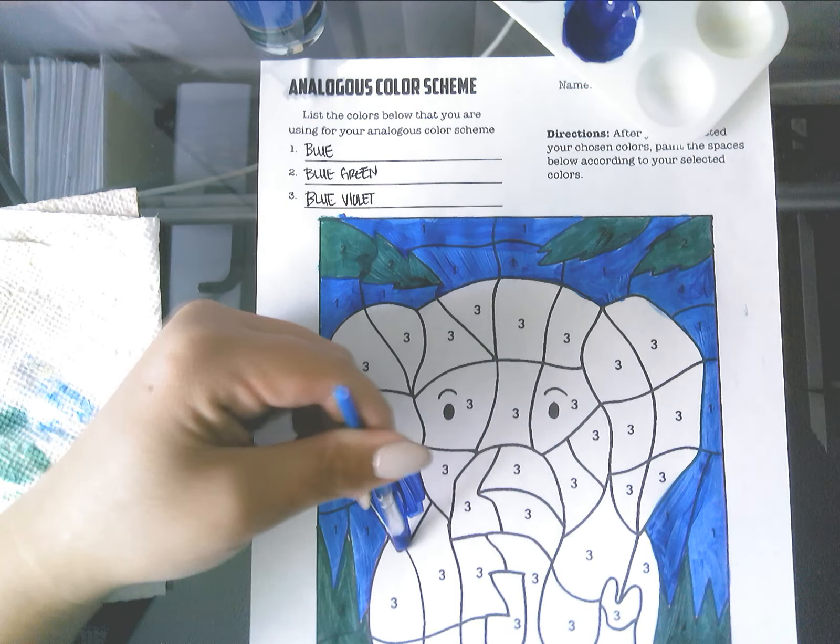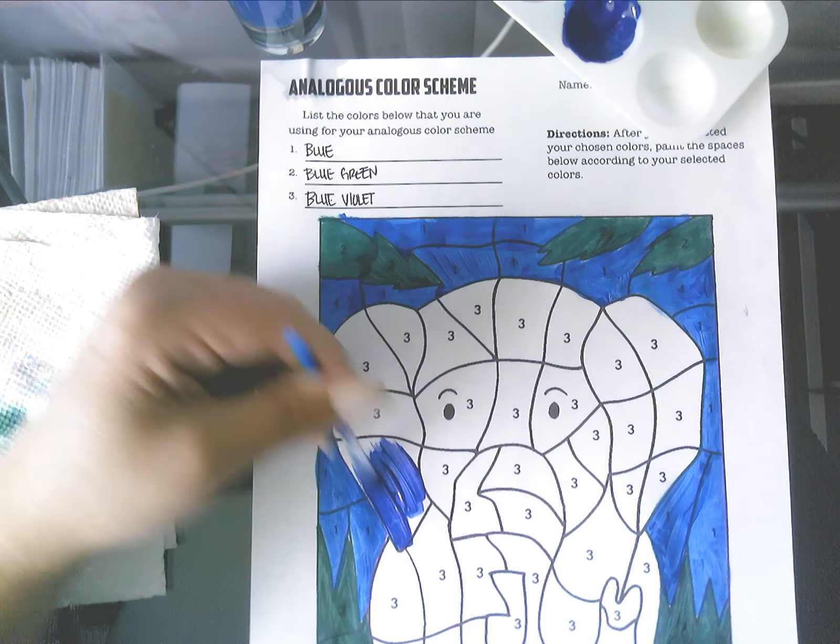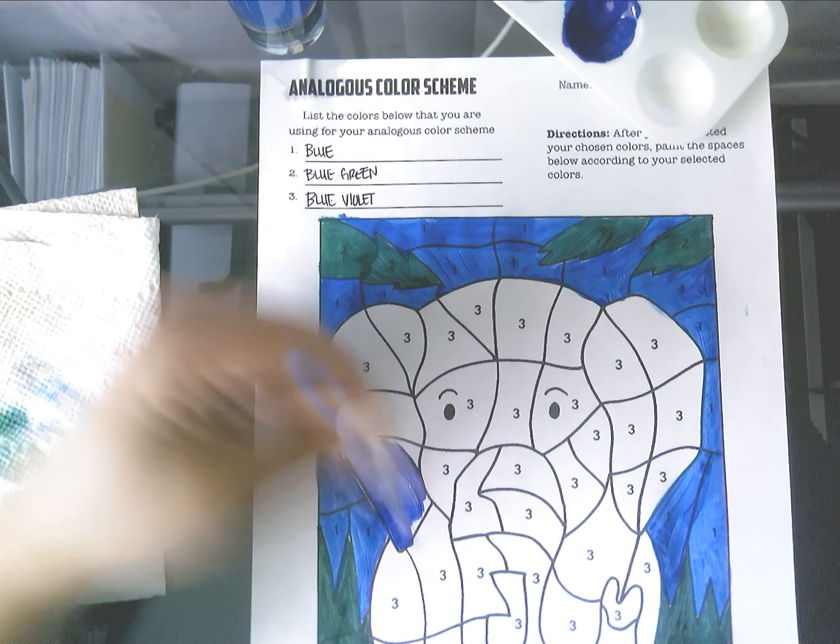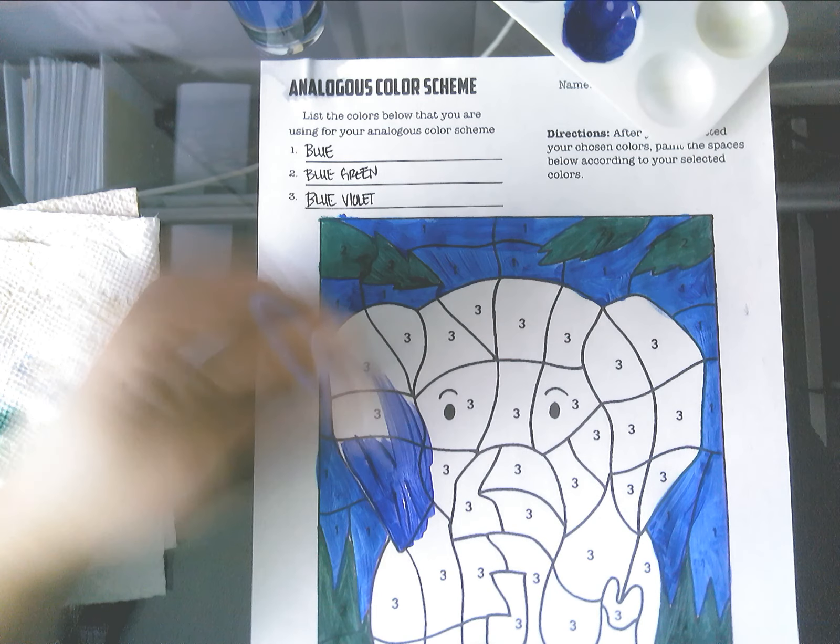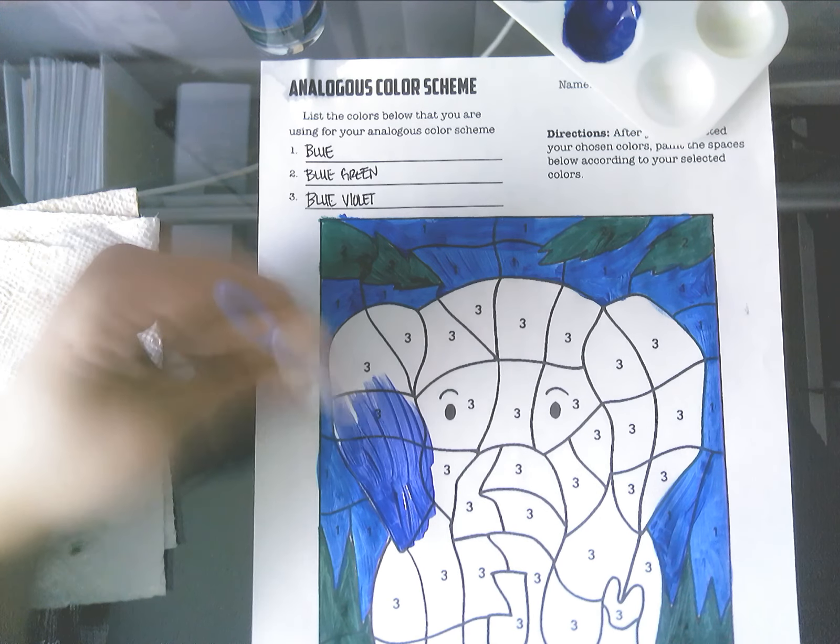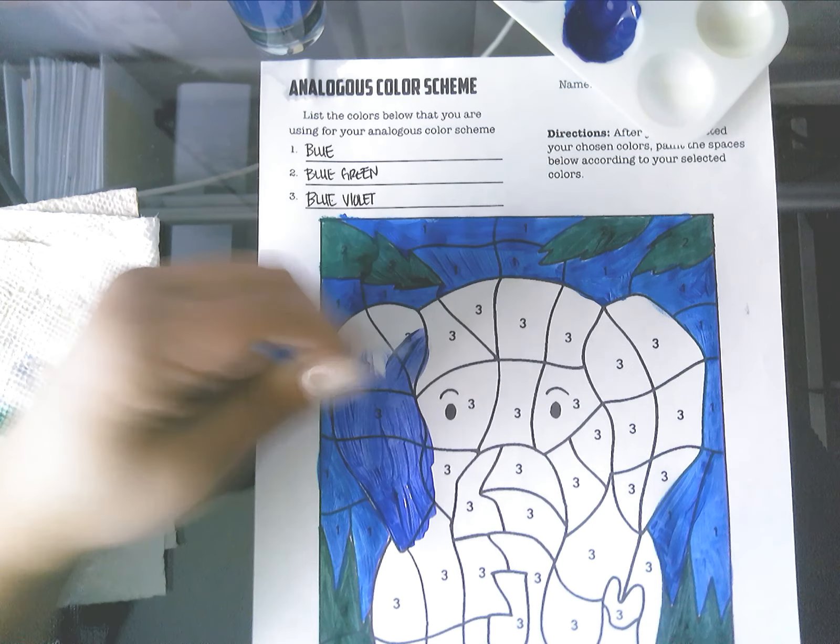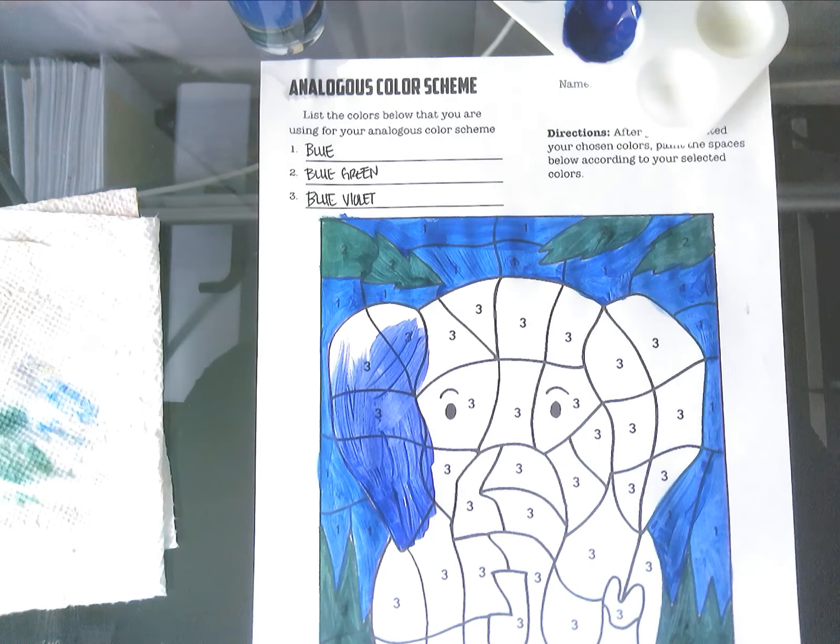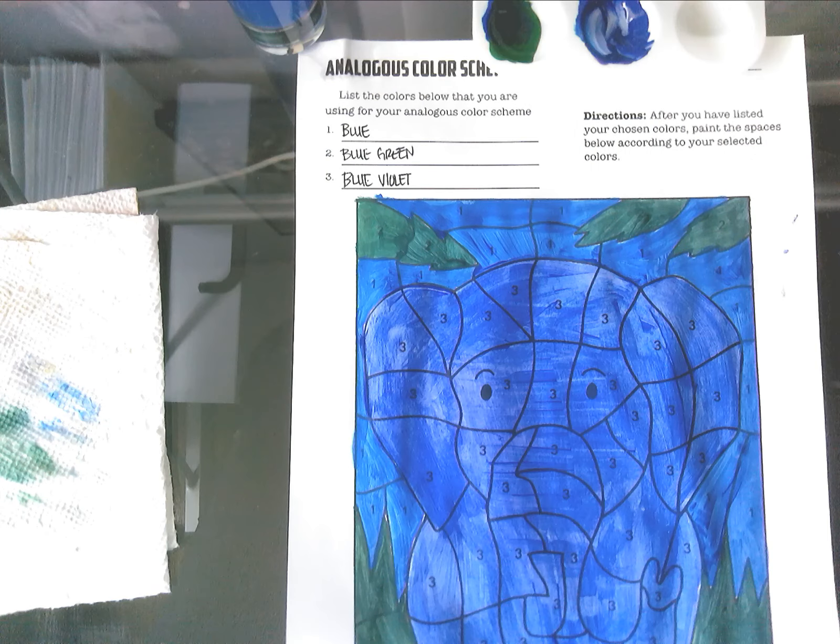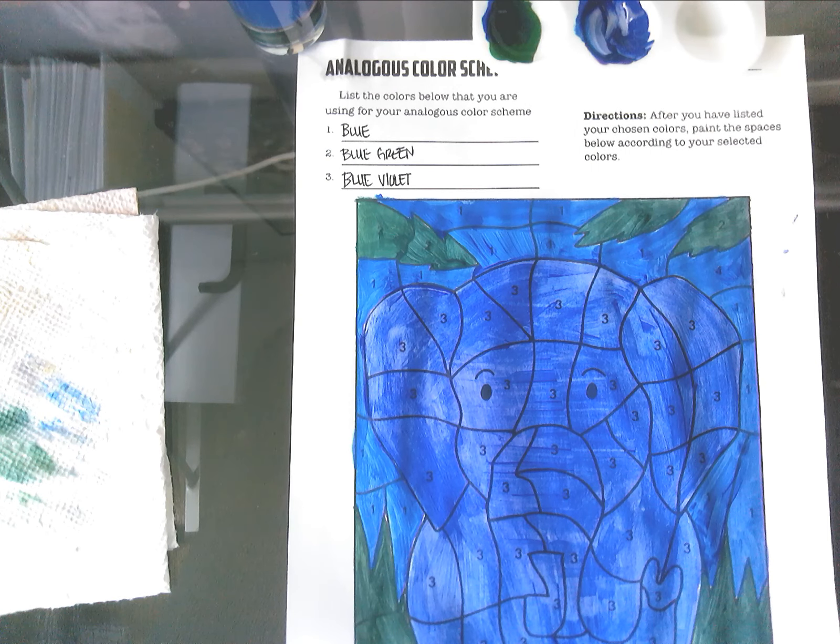Okay. So I'm going to fill the rest of this. And I don't even need to mark them because they're all number three. So I'm going to fill the rest of this with the final analogous color. And that would be my blue-violet. And there we have it, our analogous color scheme.